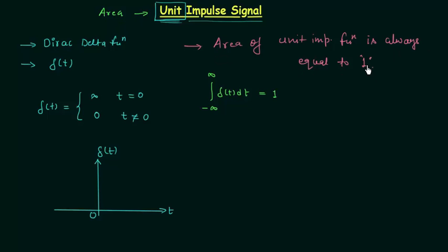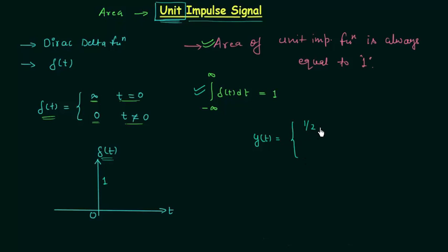This is the definition of unit impulse signal, and by using this definition we have obtained this result. Now I will explain how δ(t) equals infinity when t equals zero, and δ(t) equals zero when t is not equal to zero, using the definition of unit impulse signal. Let's take signal y(t), which equals 1/2a when time t is between minus a and plus a. There is a reason we have chosen 1/2a as the value of y(t) — it will be clear shortly. When t is not in this range, y(t) is equal to zero.